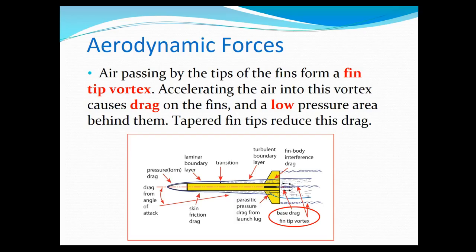And then finally, there's a thing called base drag or fin tip vortex. That has to do with an area of pressure that's at the back of the rocket. You see the same thing on semis traveling down the interstate. Sometimes you might see a little shape on the back like a bubble. That's actually to reduce base drag and it increases the mileage of a semi.